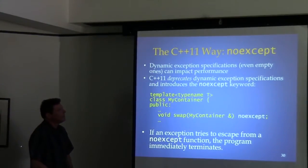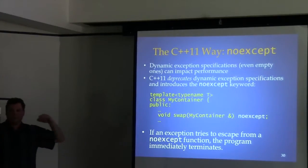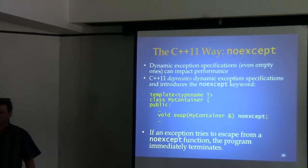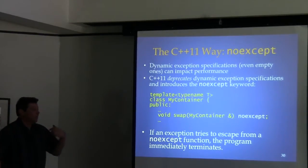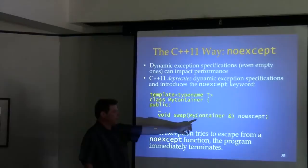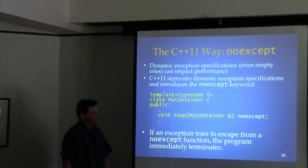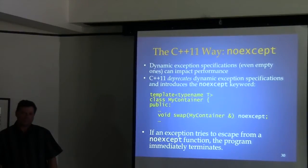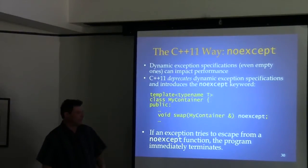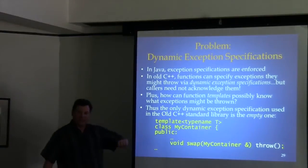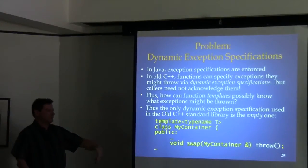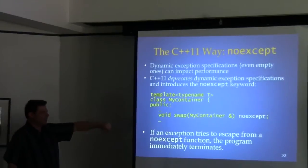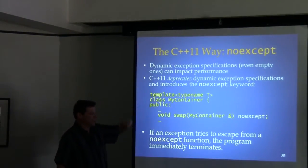That form of the throw keyword has been deprecated for C++11 and on — don't use it anymore. The new version is called noexcept. The keyword noexcept says this function does not throw an exception, and it's kind of equivalent in meaning to throw(). But internally, without a list of potential exceptions to maintain, the code generated from noexcept is more efficient than it used to be from the empty throw clause.